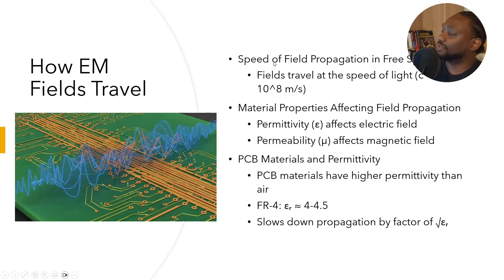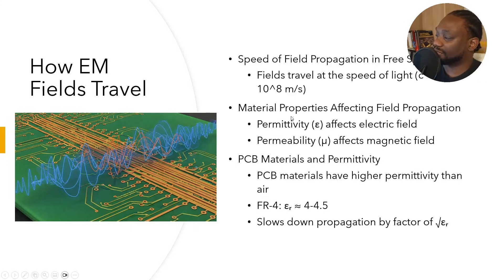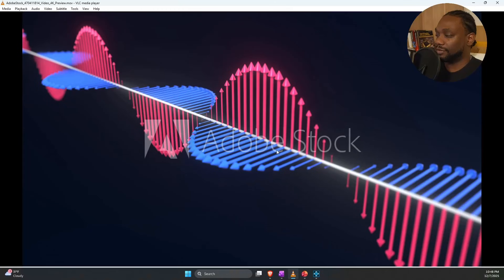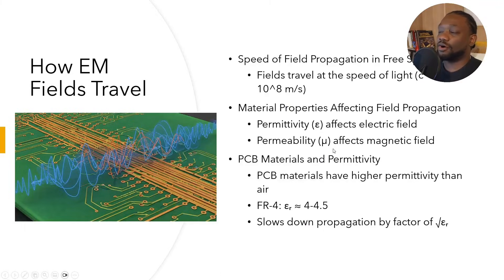The speed of field propagation in free space is the speed of light: C equals 3 times 10 to the 8 meters per second. The material properties that affect the speed of propagation — how fast does it go? Materials have this thing called permittivity, which affects the electric field — the blue part. Materials also have this thing called permeability, which affects the magnetic field.